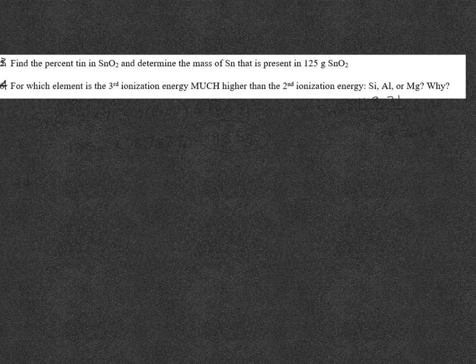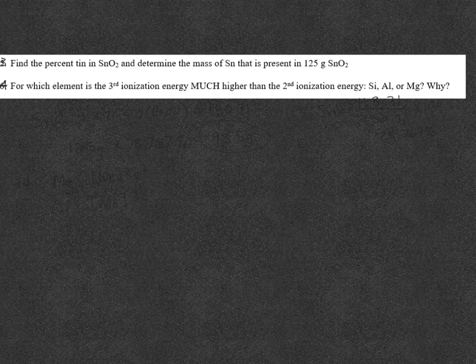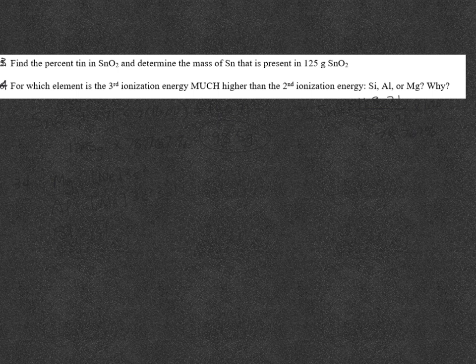There's an exponential jump once an element has obtained the electron configuration of a noble gas. So if we look at our electron configurations, magnesium is neon 3S2, aluminum is neon 3S2, 3P1, and silicon is neon 3S2, 3P2.